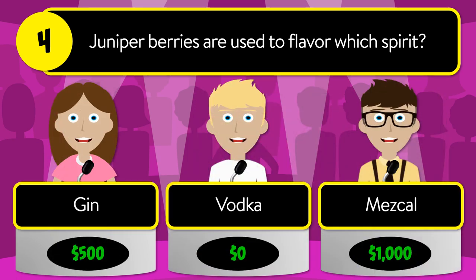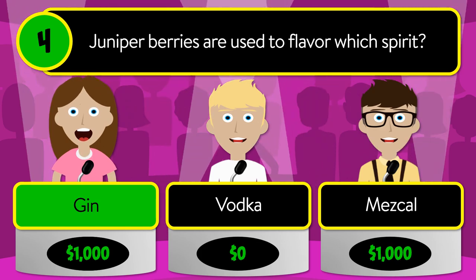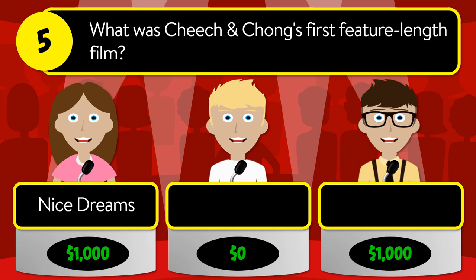Question number four: juniper berries are used to flavor which spirit? Is it gin, vodka, or mezcal? The correct answer is gin.